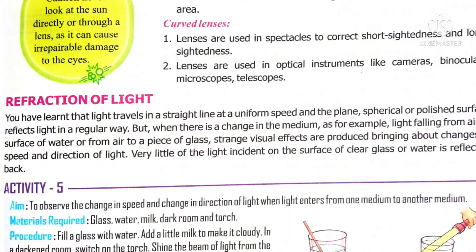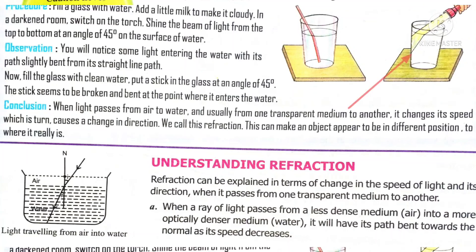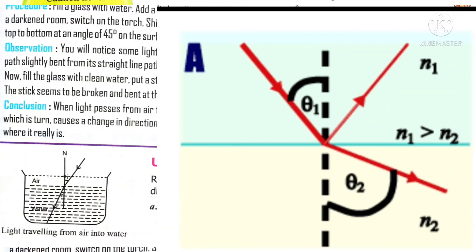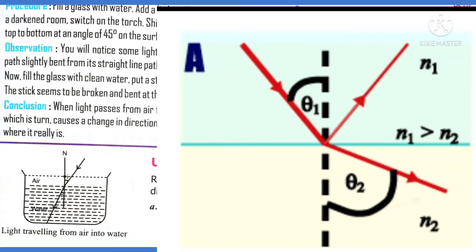That is why the pencil looks bent inside the water. When a ray of light passes from a less dense medium like air to a more dense medium like water, it bends towards the normal because the speed of light decreases. The reverse occurs when light travels from denser medium water to less dense, rarer medium air — it bends away from the normal because the speed of light increases. This is your perpendicular line to the surface. This image bends towards the normal, and this image bends away from the normal, because the speed of light is greater in the less dense medium.